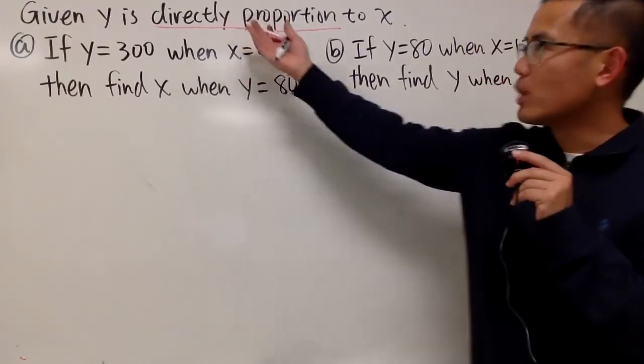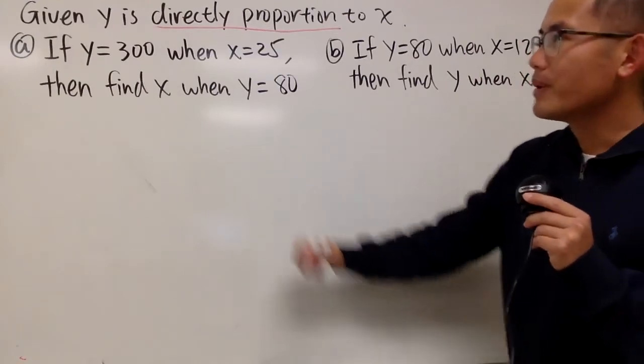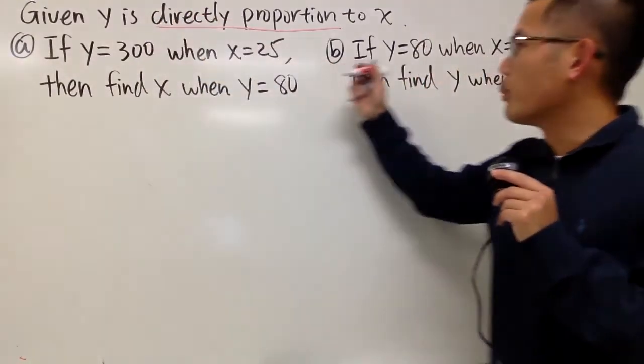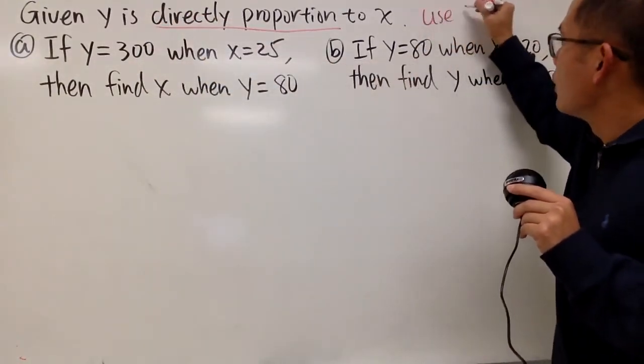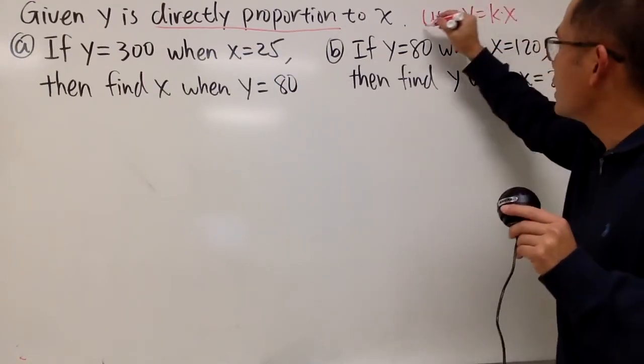Okay, here we are given that y is directly proportional to x, and we are going to solve these two equations. Well, because we know that y is directly proportional to x, we know y is equal to k times x, right? So this is the equation that we are going to use.